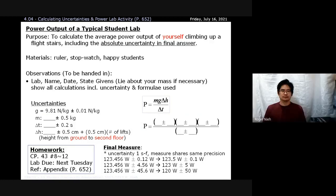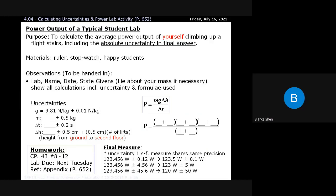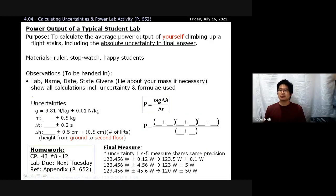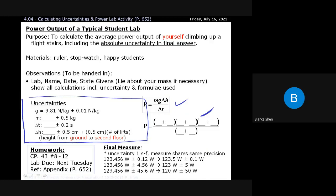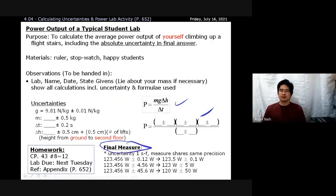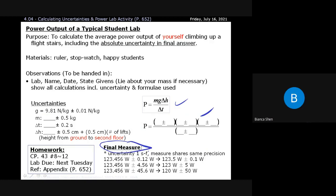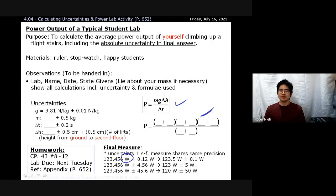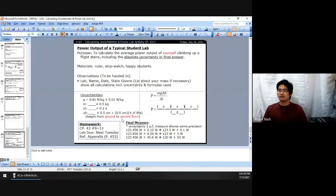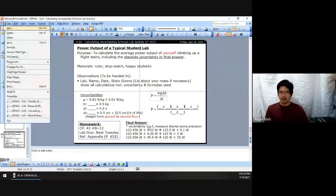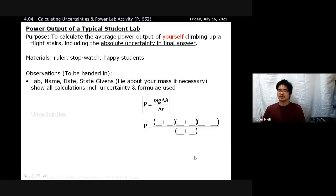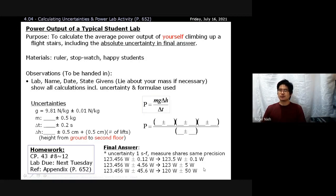A student asked: are uncertainties and final measure in different sections? Yes — you start with your givens listing your uncertainties, then do all your calculations, and your final measure is your final answer at the end: power measured in watts with its uncertainty. Final measure equals final answer.